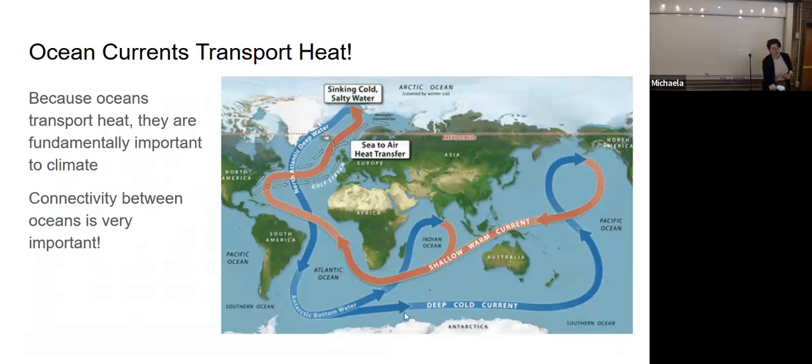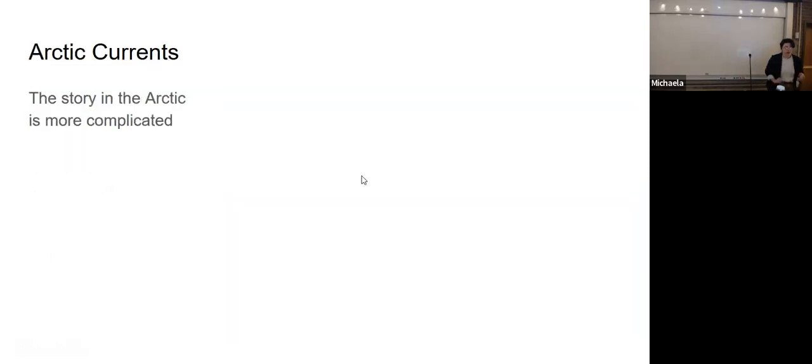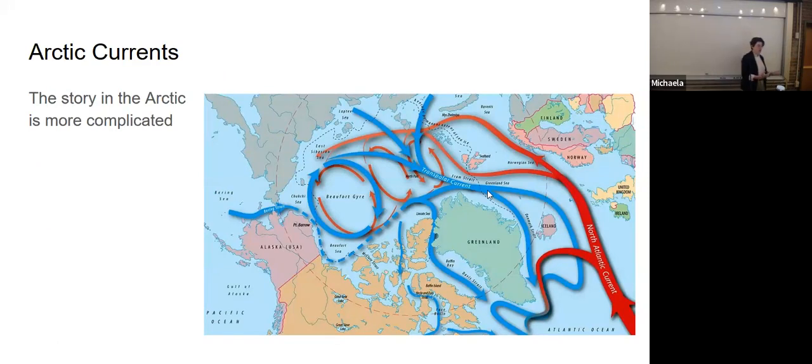Because oceans transport heat, they're fundamental to climate. Oceans are really a part of our climate system. The oceans and the climate go together. This current is driven by differences of temperature and salinity, but it's shaped by where the continents are. Water can't flow over the land. Where the continents are, to some extent, determines where this ocean flows. This connectivity is important. This point is really driven home if we look up in the Arctic.